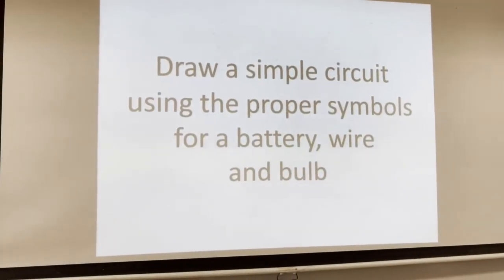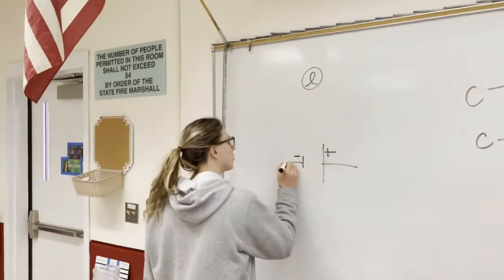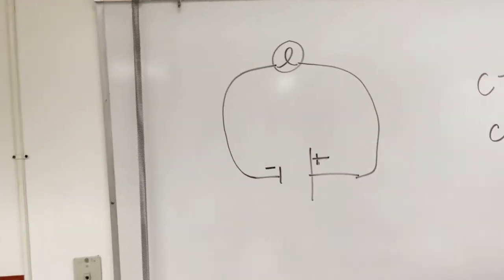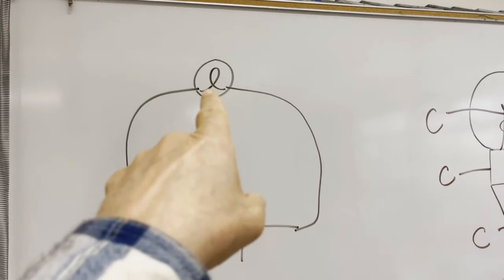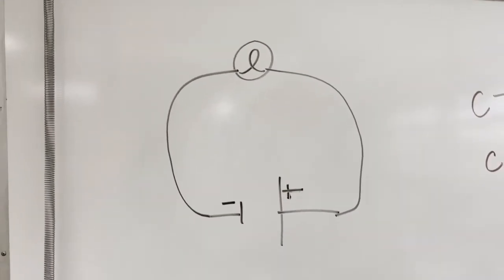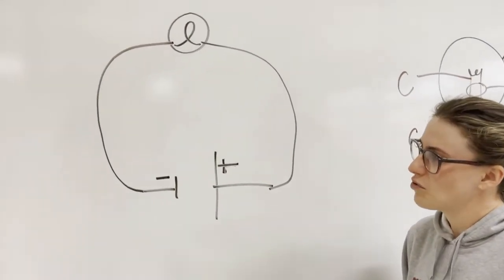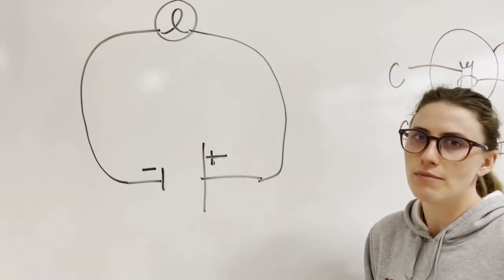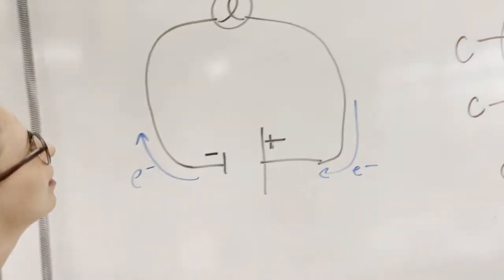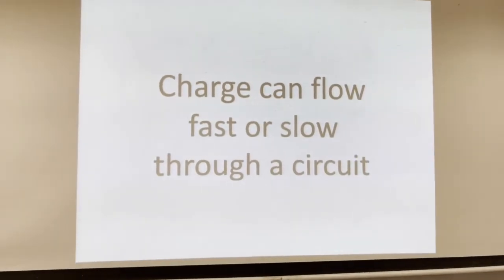The symbol for a bulb is a loop with a circle around it. Draw a simple circuit using proper symbols for battery, wire, and bulb: we already have the battery and bulb, all we have to do is draw wires — boom, done. We have a complete unbroken circuit. Bonus question: if you're an electron, which direction do you flow? Electrons are attracted to positive and repelled from negative, so they flow out the negative and toward the positive.